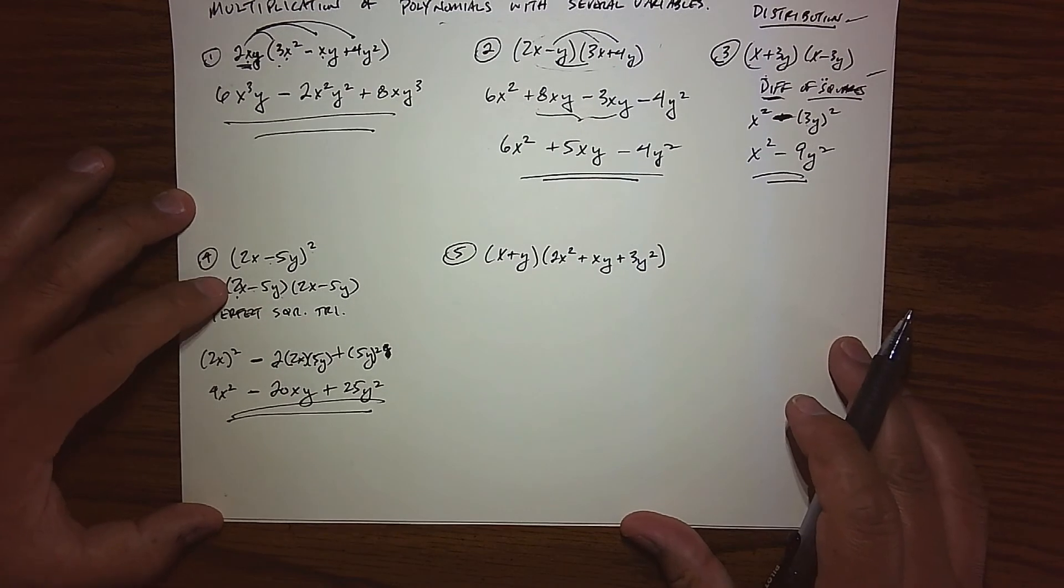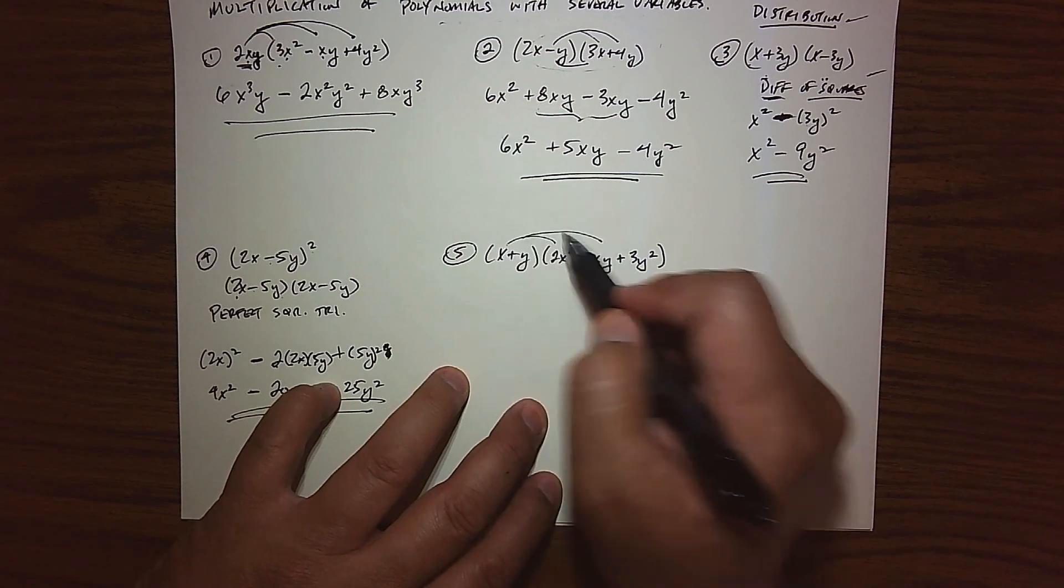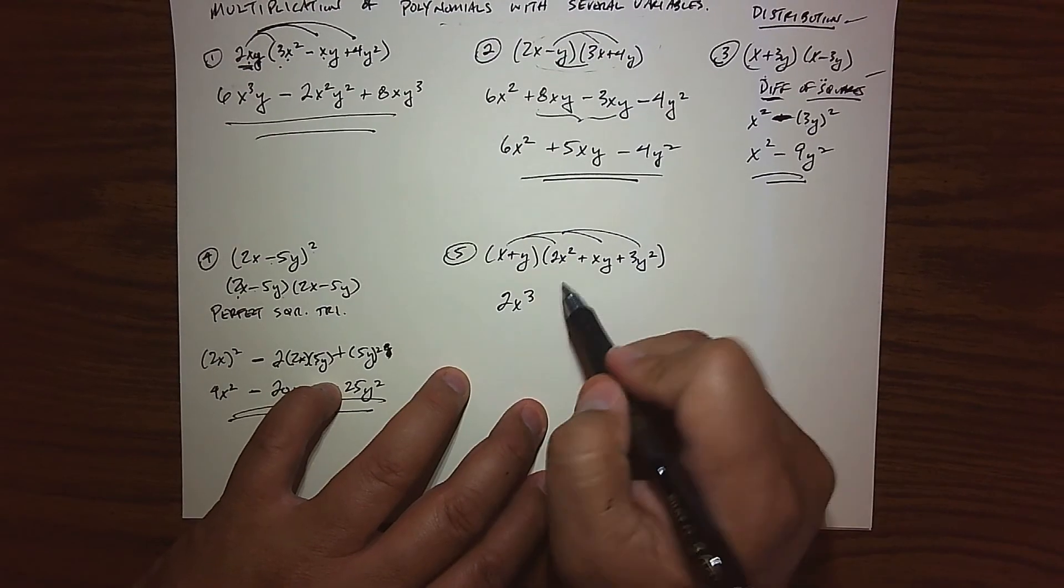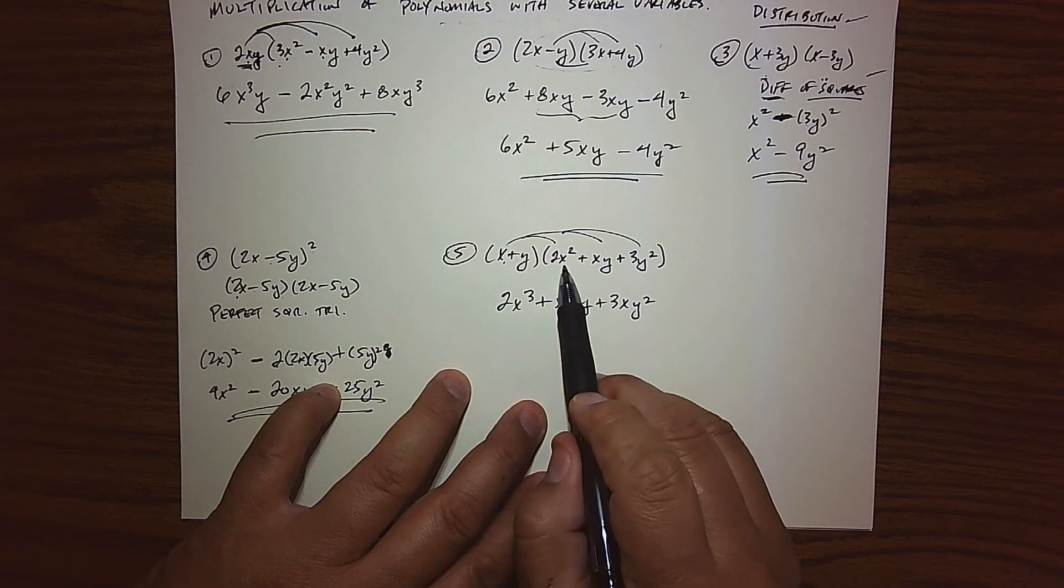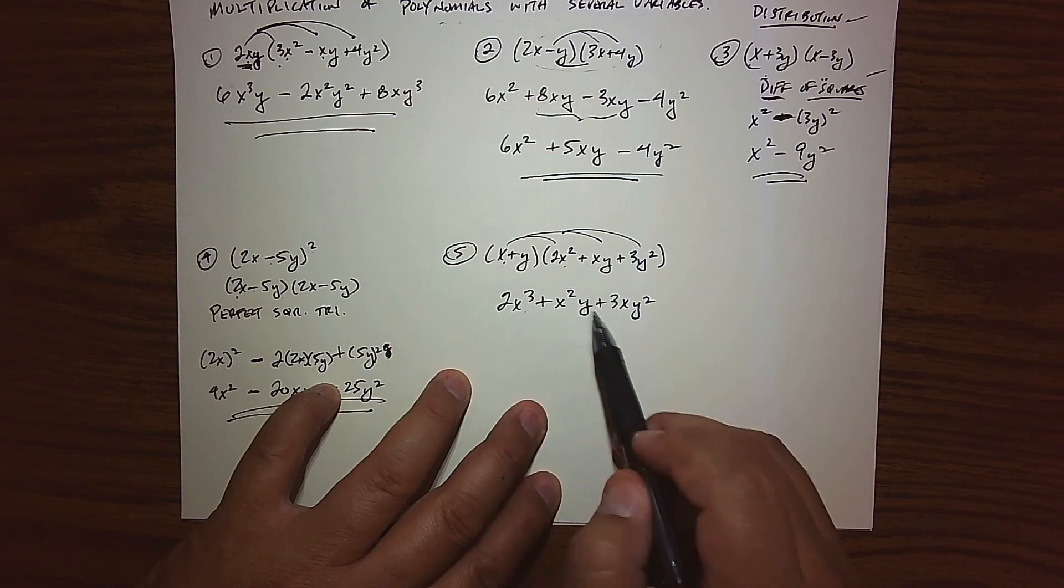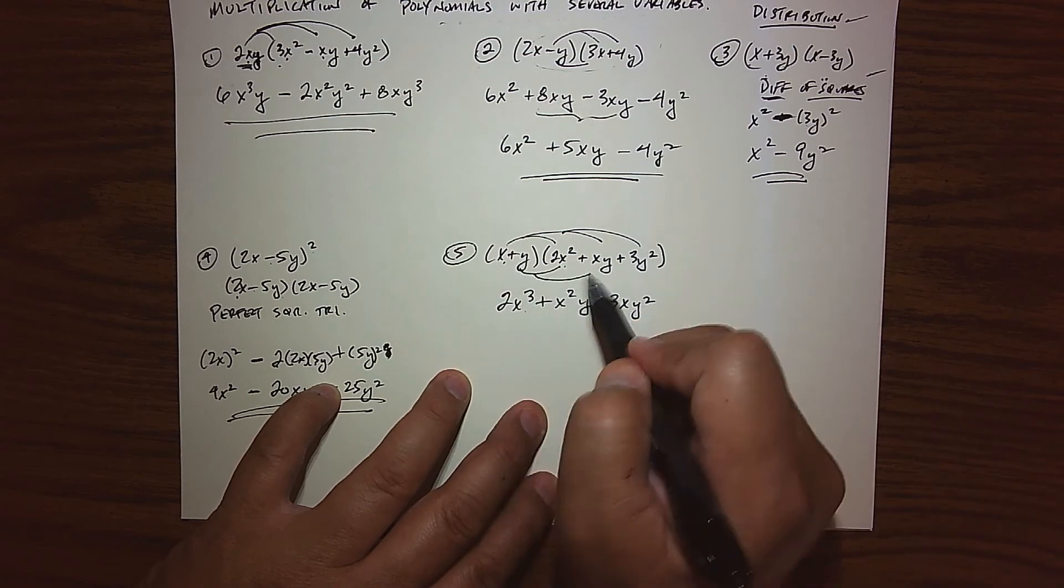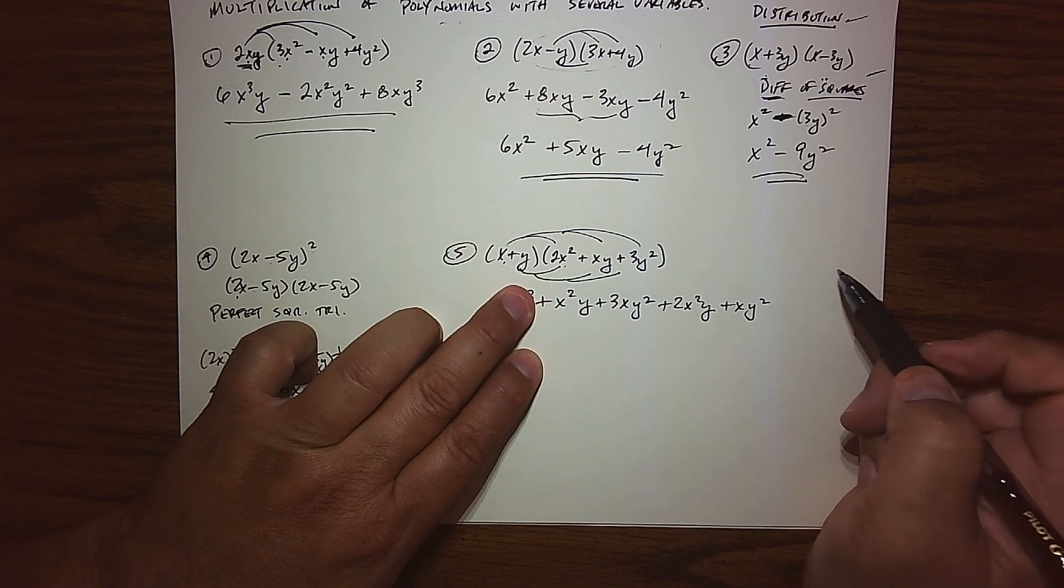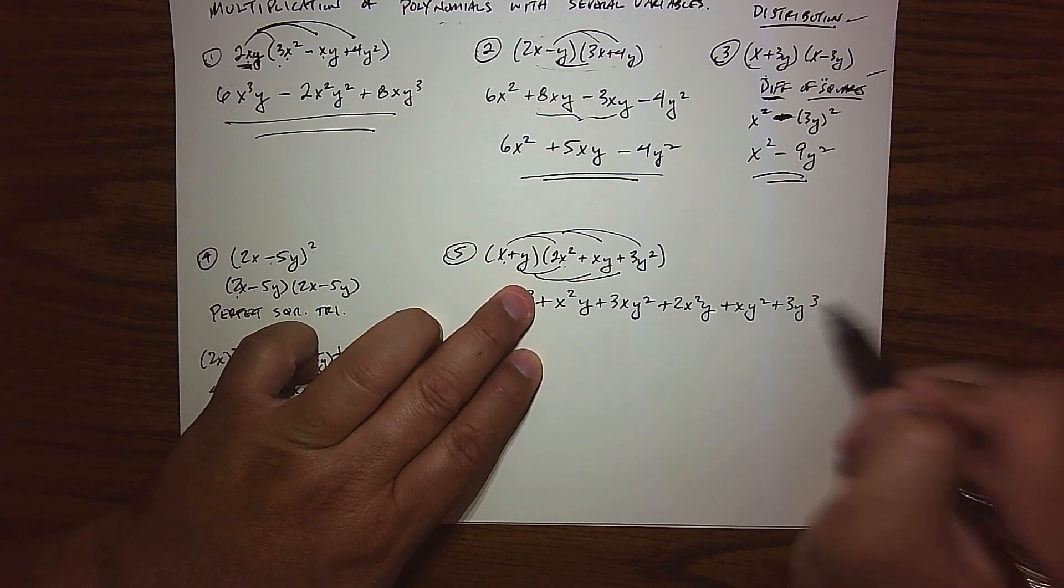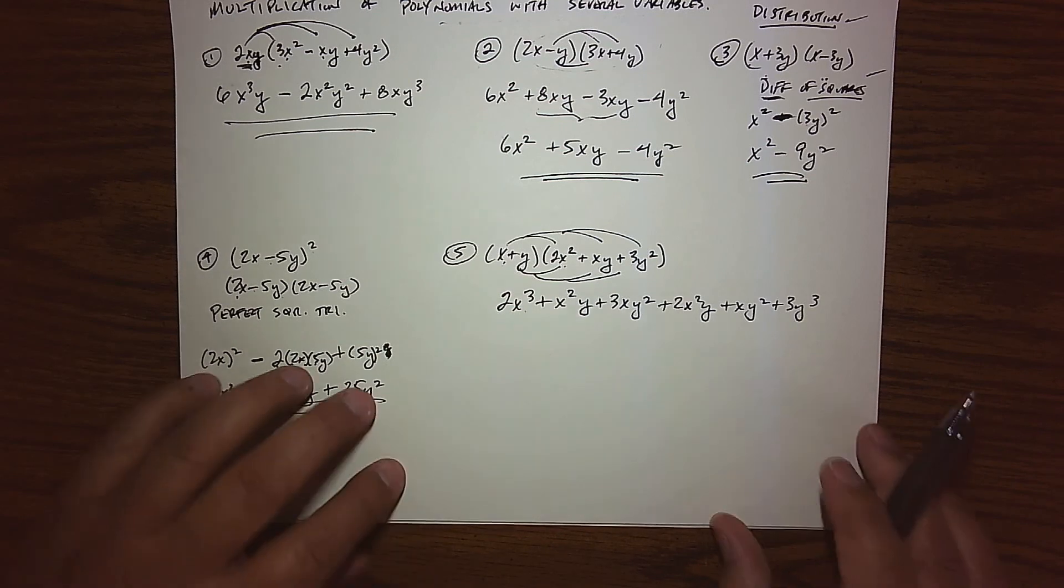So trying to make this harder, I now have a binomial times a trinomial. So FOIL is no longer in play, but we definitely still have our term by term multiplication. So multiplying through by x, I get 2x cubed plus an x squared y plus a 3xy squared. So x times x squared is 2x cubed. x times x is x squared and a y. There's no x here. So 3xy squared. Coming back through and doing the same thing with my y, we get a positive 2x squared y. We get a positive xy squared. And then last but not least, we get a plus 3y cubed. So there's our term by term multiplication.